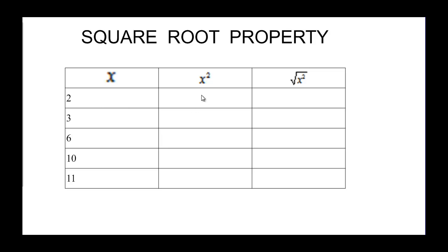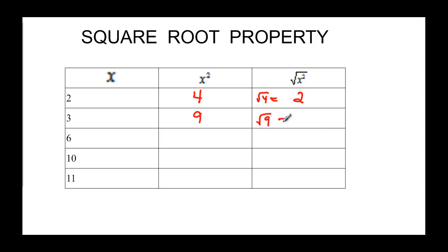So 2 squared is going to be 4. The square root of x squared is really undoing — they undo each other. So if I undo 4, I go back to the 2. And 3 squared would be 9. This is really saying that the square root of 4 over here was equal to 2. 3 squared equals 9, so the square root of 9 would take us back to the 3.